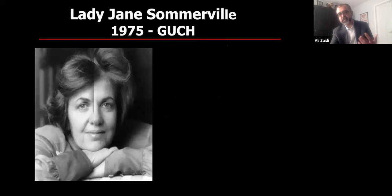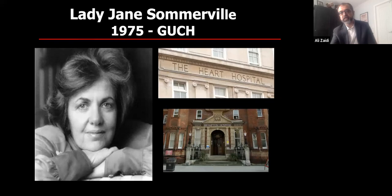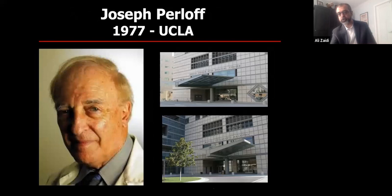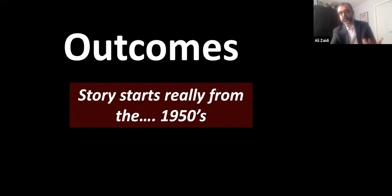I've just taken you over about a 300-year journey of how congenital heart disease was discussed — essentially all kids who were dying. But why adult congenital heart disease? The first time someone talked about ACHD on a national forum was Lady Jane Somerville at the Heart Hospital at the Brompton. In 1975 her words were, 'This will be a tsunami that will hit in about 20 years because these kids will start surviving.' In America, James Joseph Perloff at UCLA established the first ACHD clinic — about 45 years ago.